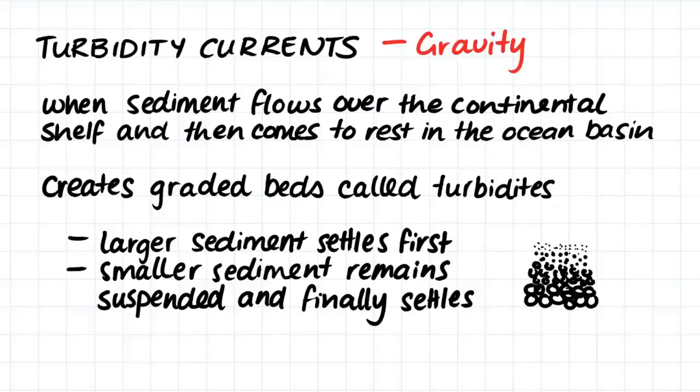Turbidity currents create graded beds called turbidites and these graded beds are characterized by having larger sediment at the bottom which settled first out of the current and then the smaller sediment on top which settles last out of the current as it remains suspended in the water for a much longer time.